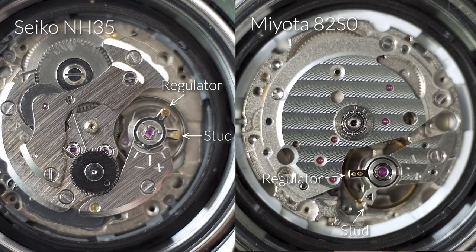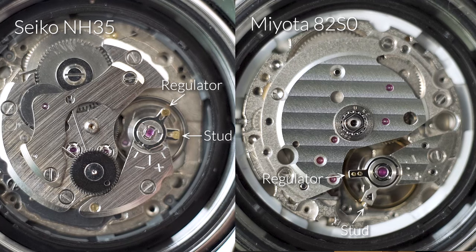The stud is used in correcting beat error which we'll cover in another video. The regulator is the one we will be adjusting for watch accuracy.